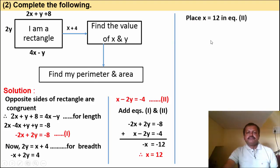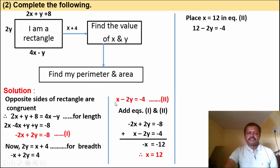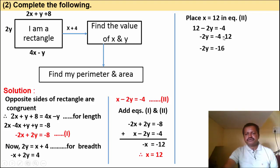Now place x equal to 12 in equation number 2: 12 minus 2y equals minus 4. Solving: minus 2y equals minus 4 minus 12, which is minus 16.